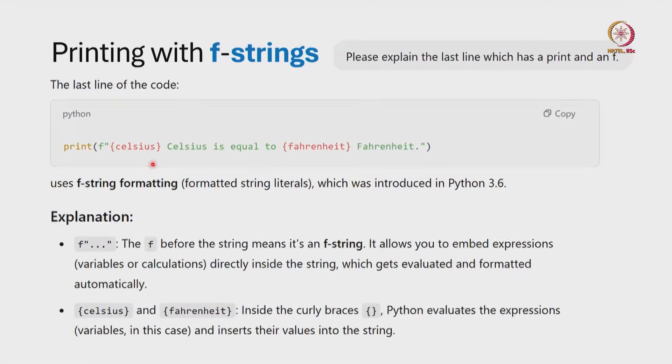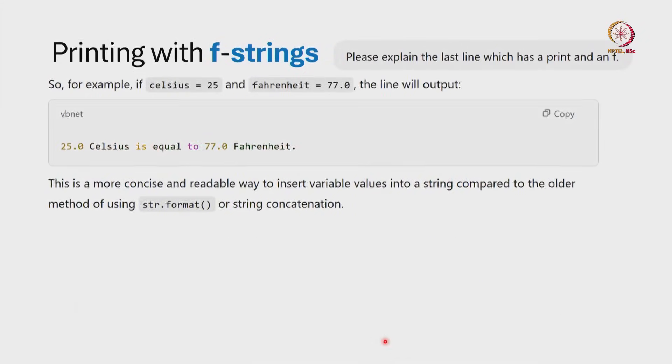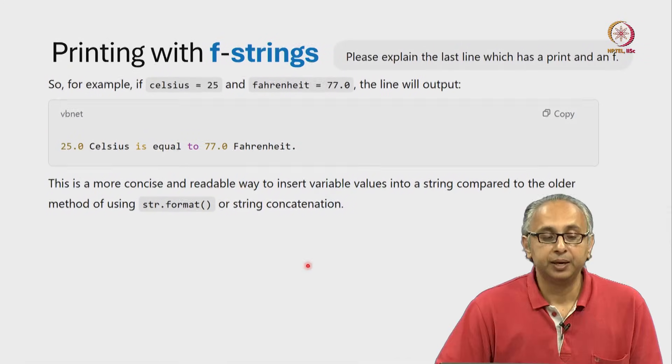So, in this example we had Celsius inside these curly brackets and Fahrenheit within these curly brackets. So, inside these curly brackets, Python will evaluate these expressions. In this case, these are just variables. So, their values will be evaluated and then those values will be inserted into the string.